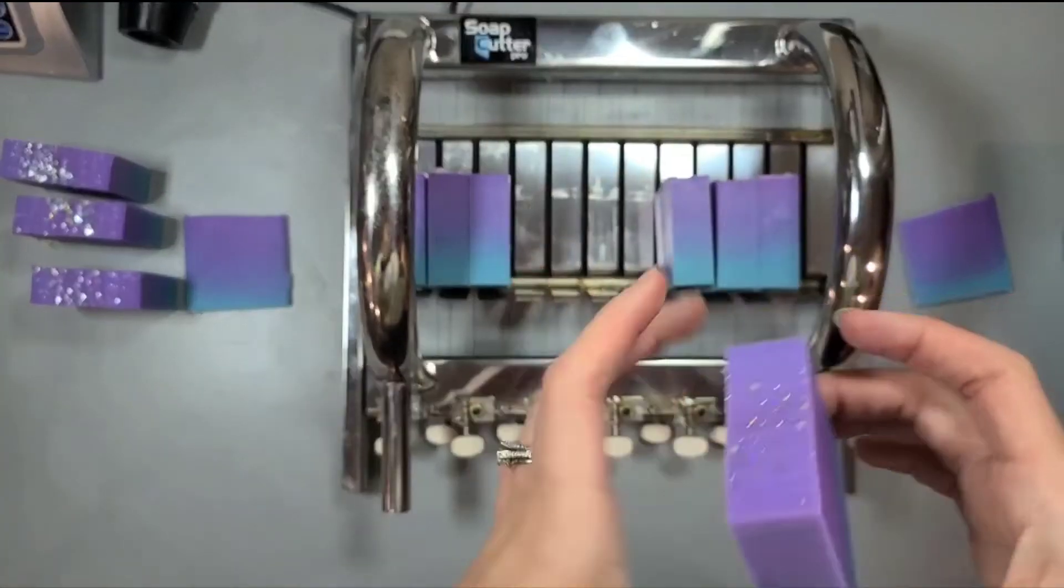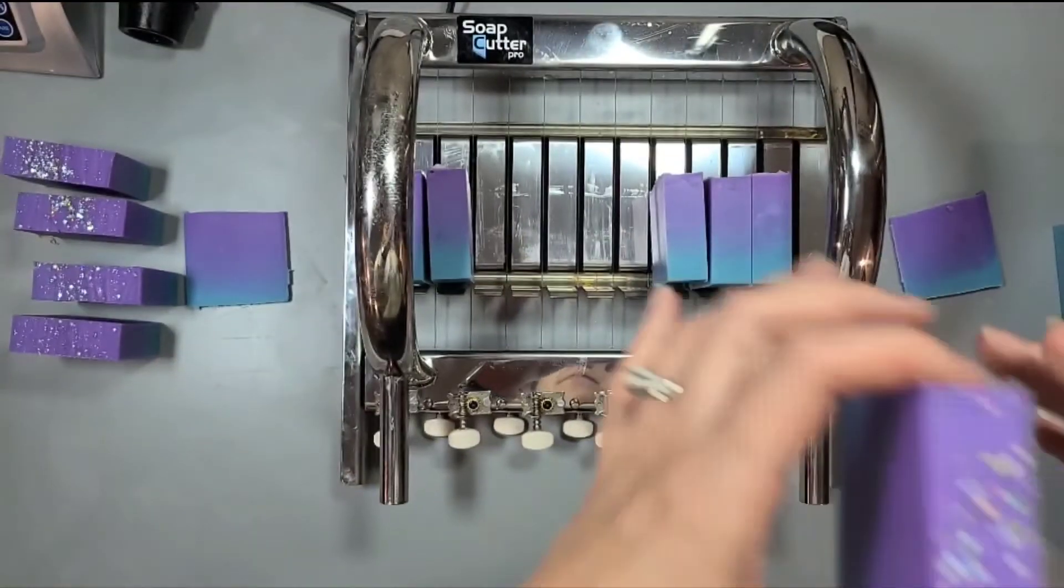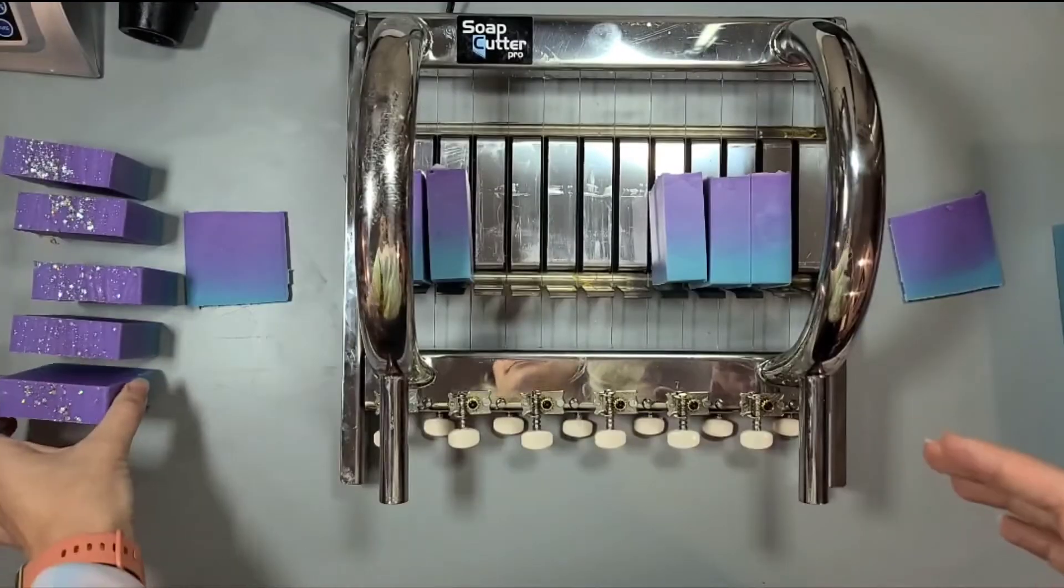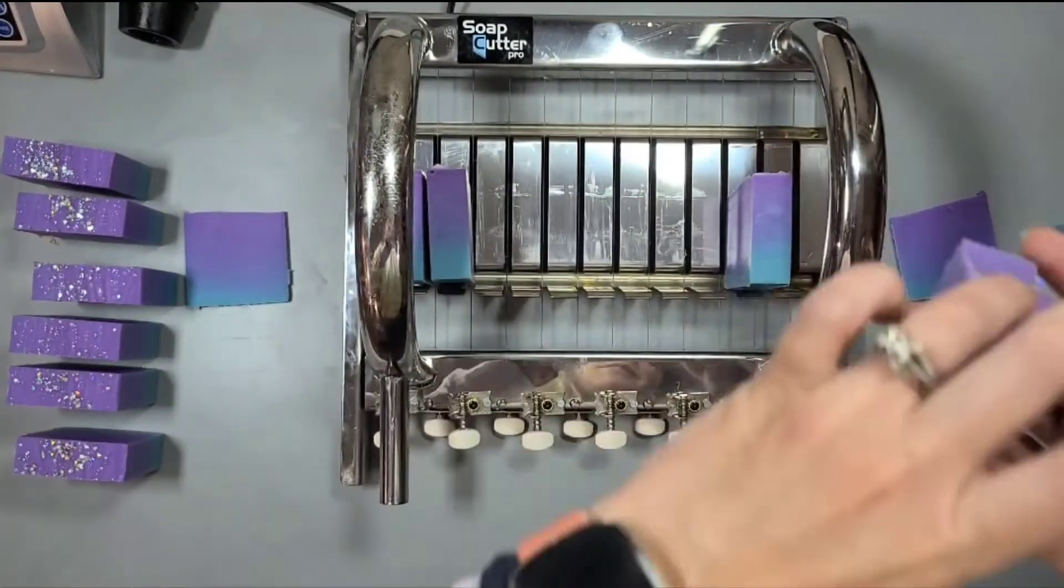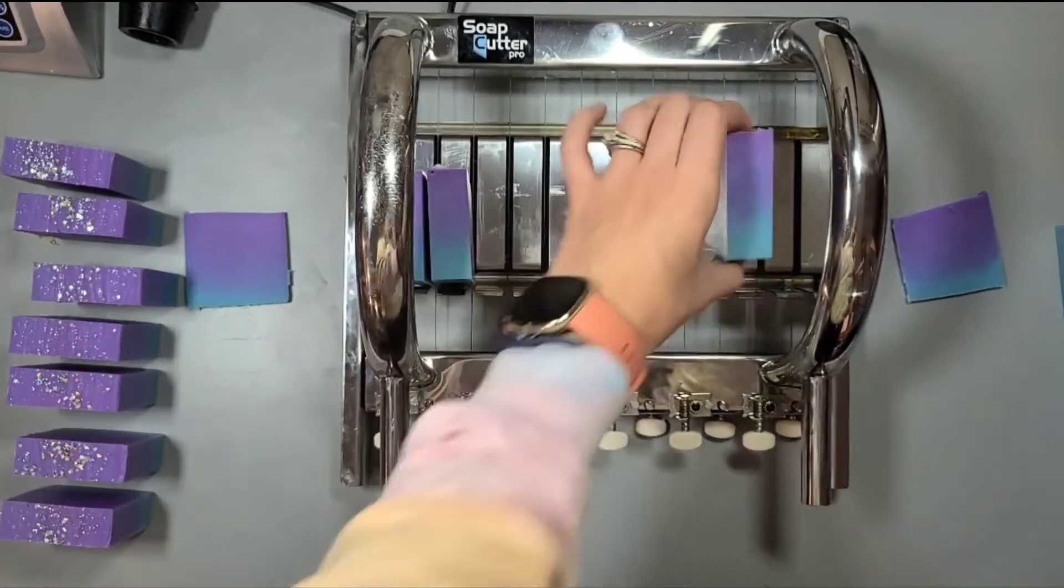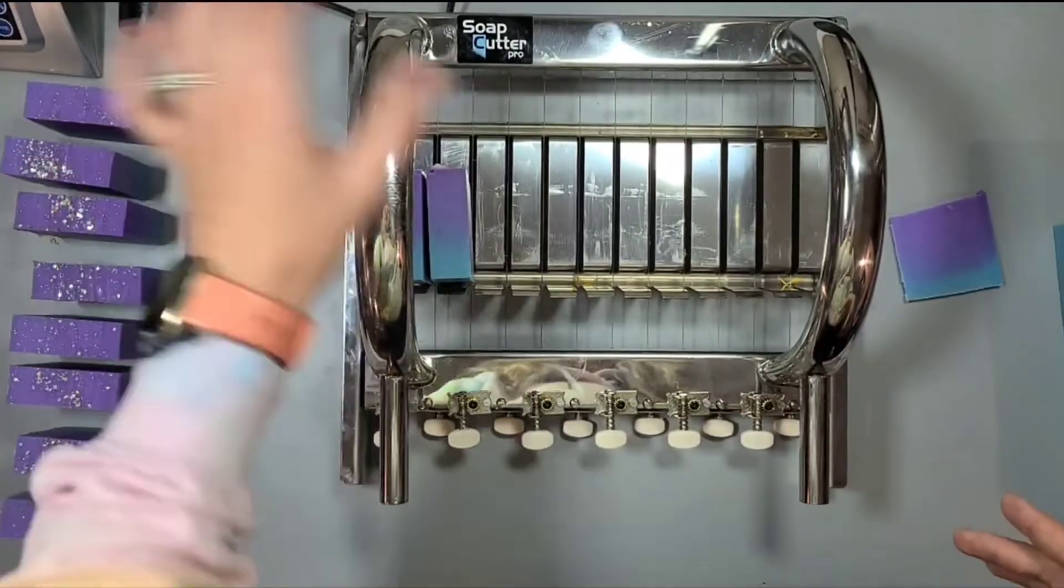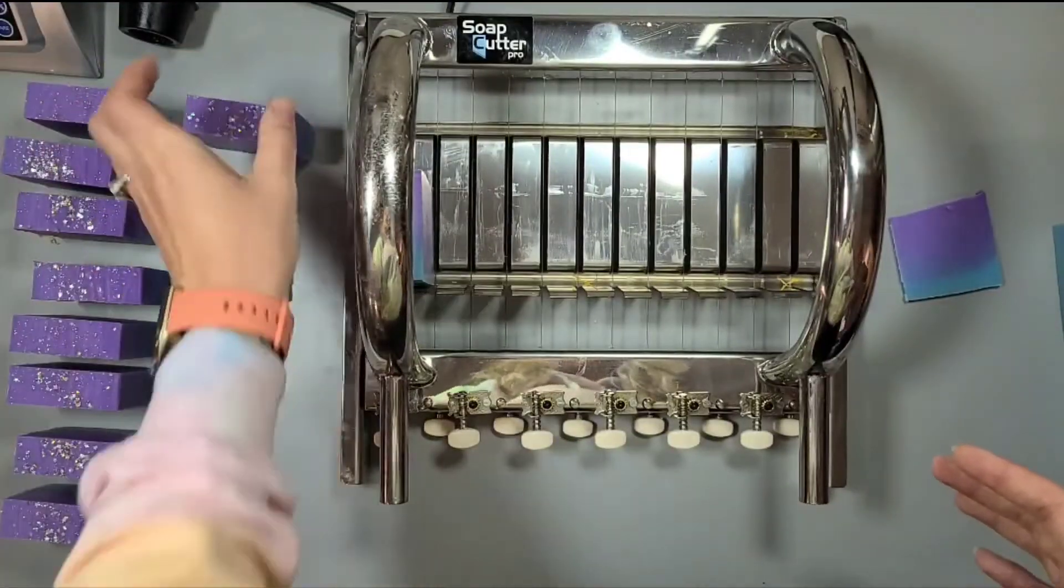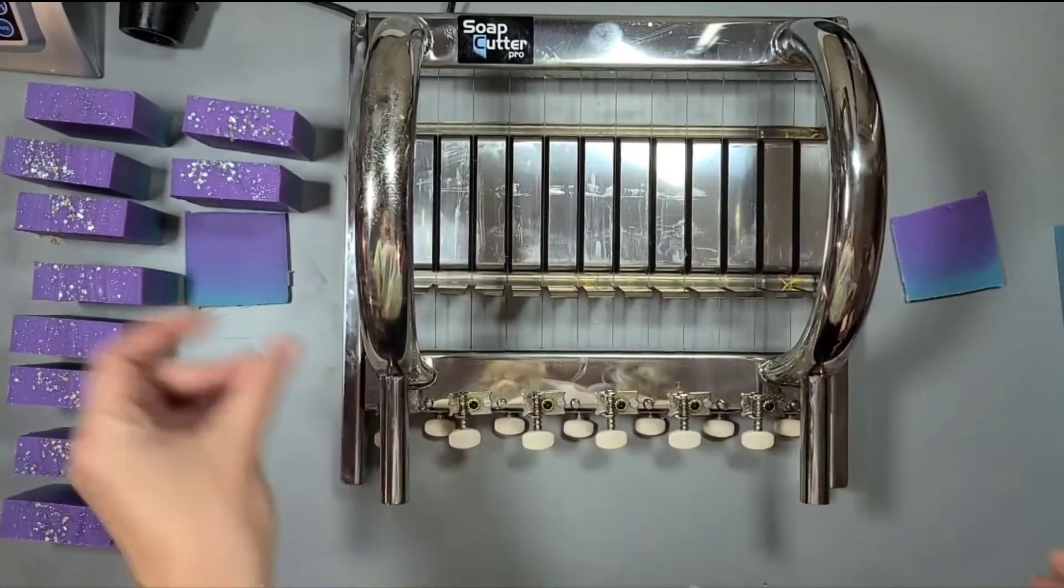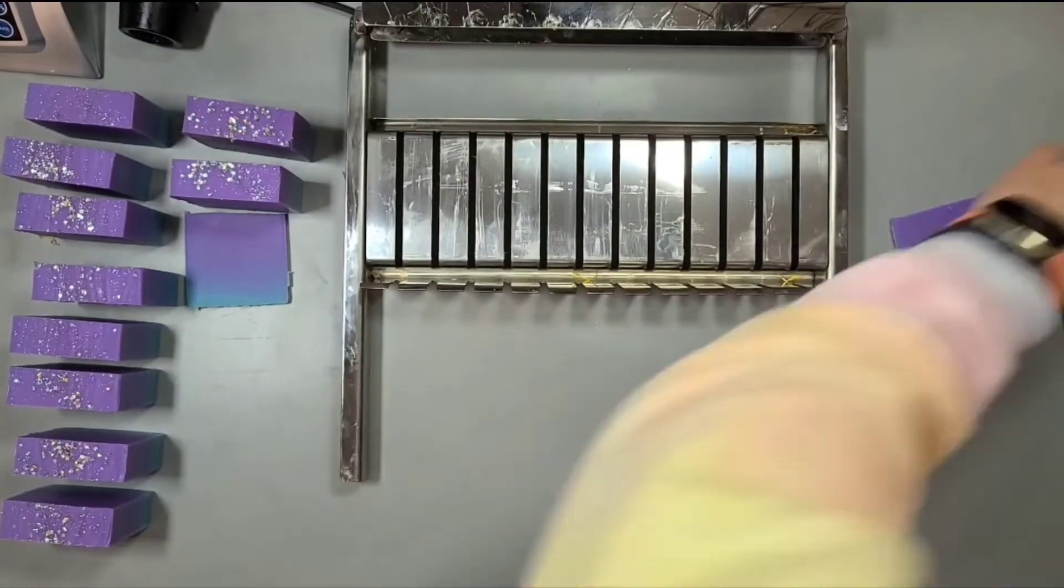It makes the soap look really clean. So I will always be in the world of rustic bars, too, with the raw edges, the zigzag cut. But for these bars, I'm going to bevel these. I think they'll look really nice that way. They smell so good. I can't express that enough. I love the white tea fragrance oil. I will definitely be buying more of that.